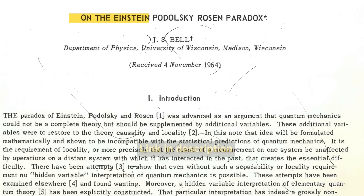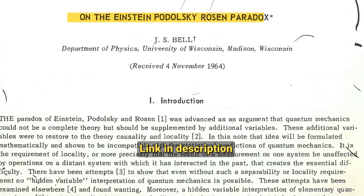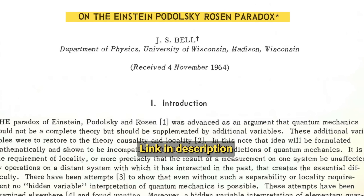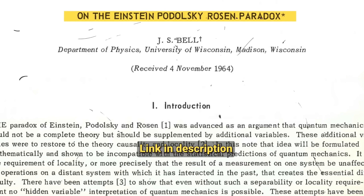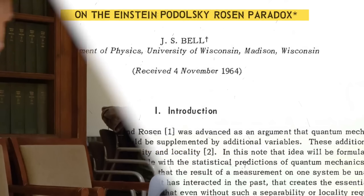To explain the Bell inequality, I have to start with where it came from. Bell's theorem in 1964 is in a paper called 'On the Einstein-Podolsky-Rosen Paradox.' He's referring to a 1935 paper by Einstein, Podolsky, and Rosen. So I have to talk about that paper and what they did, and then what Bell was supposed to do.